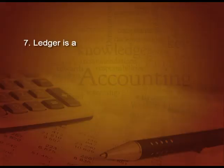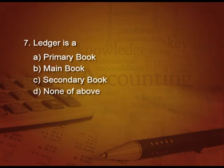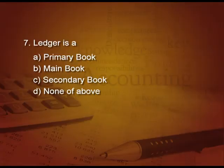One more question: ledger is — A a primary book, B a main book, C a secondary book, D none of the above. The answer is B — it is a main book.